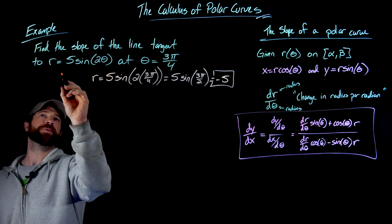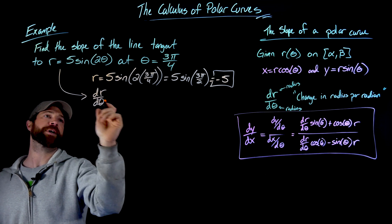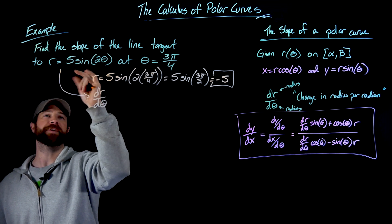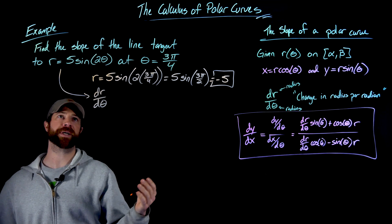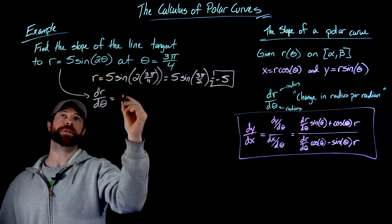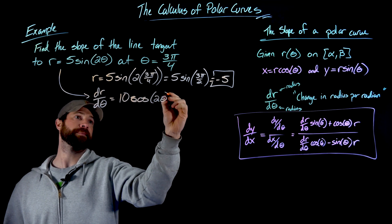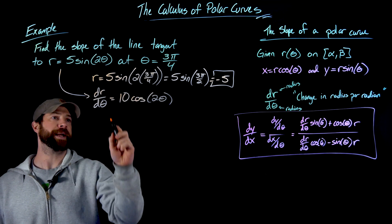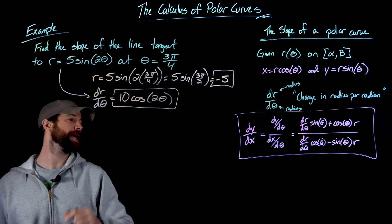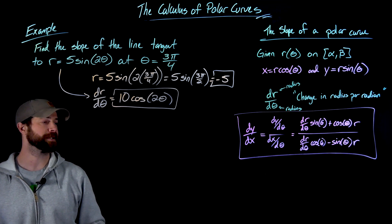The second thing I want to do is find dr/dθ, which is simply differentiating both sides of r = 5sin(2θ) with respect to θ. The five is a constant, the derivative of sine is cosine, and I'll also get a factor of two from the chain rule. So this becomes dr/dθ = 10cos(2θ). Now I have r = negative five and dr/dθ = 10cos(2θ).